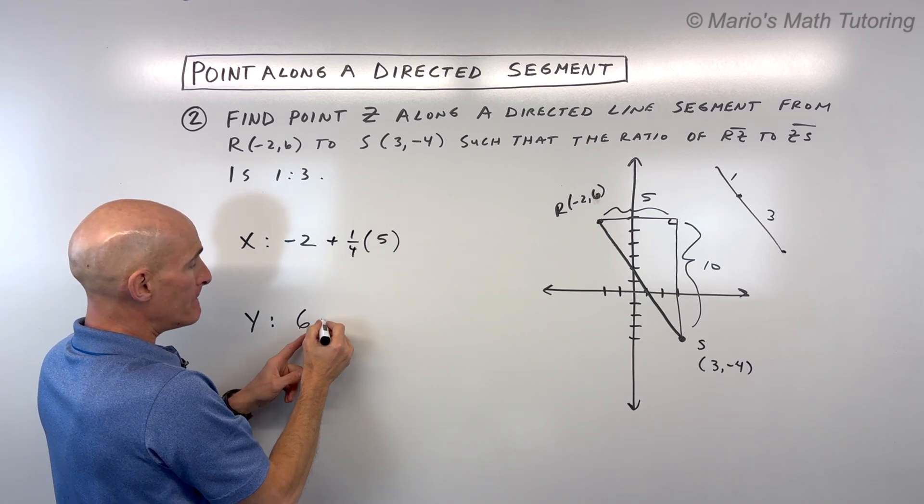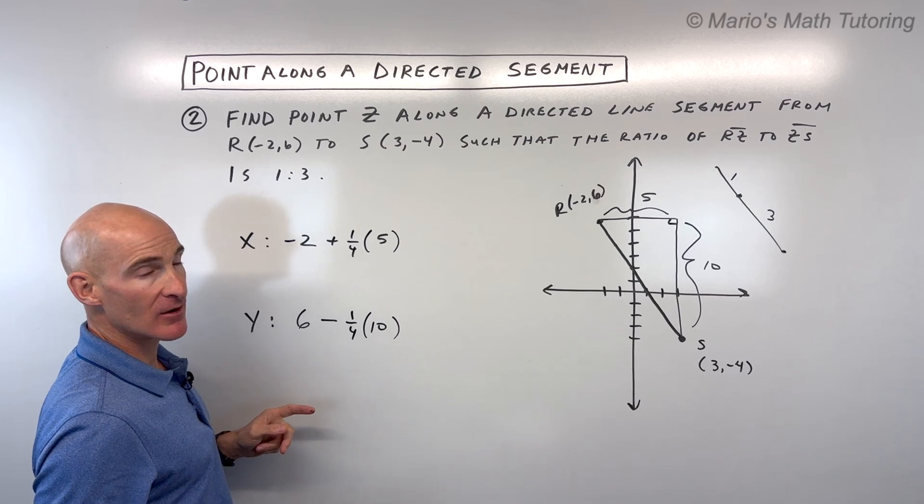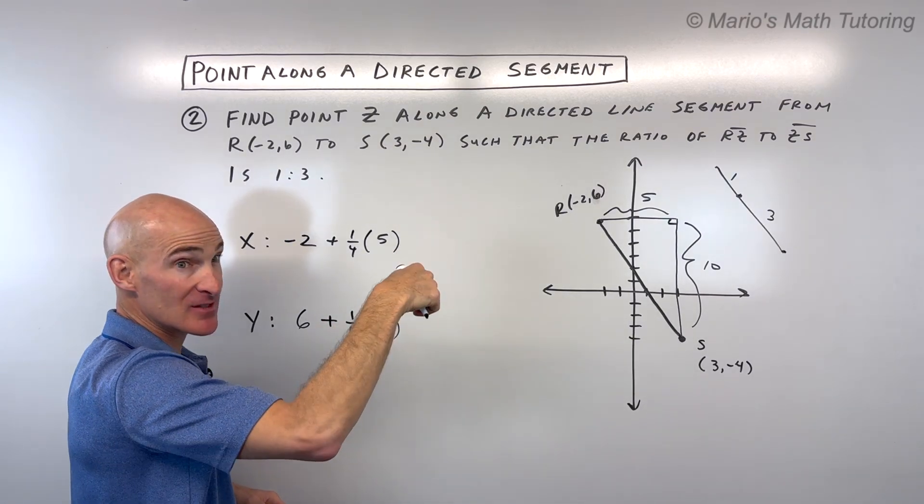And then we're going to go down 1 fourth of this 10 units here. So we're going to say minus, since we're going down, 1 fourth of 10. Or you could do plus 1 fourth of negative 10, if you want to think negative 10 like going down.